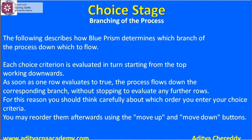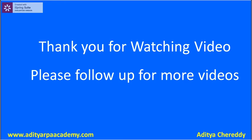Each choice criterion will evaluate in turn, starting from the top and working downwards. As soon as one row evaluates to true, the process flows down the corresponding branch without stopping to evaluate any further rules. For this reason you should think carefully about the order in which you enter your choice criteria. You can reorder them afterwards using the move up and move down buttons. Thank you for watching — please stay with us for further videos.